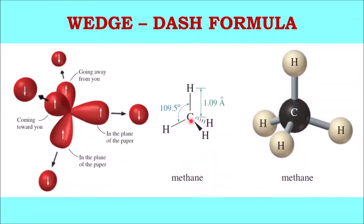The first projection formula is the wedge-dash formula. In most organic molecules, carbon is of sp3 hybridization, which gives it a tetrahedral geometry. In a tetrahedral geometry, two groups are in the plane of the paper, one bond or group is coming towards you (out of the plane of the paper), and one group is going away from you (into the plane of the paper). The groups in the plane are represented by a single line, the group coming towards you is represented by a bold bond called the solid wedge, and the group going away from you is represented by a dash bond, also called the broken wedge.